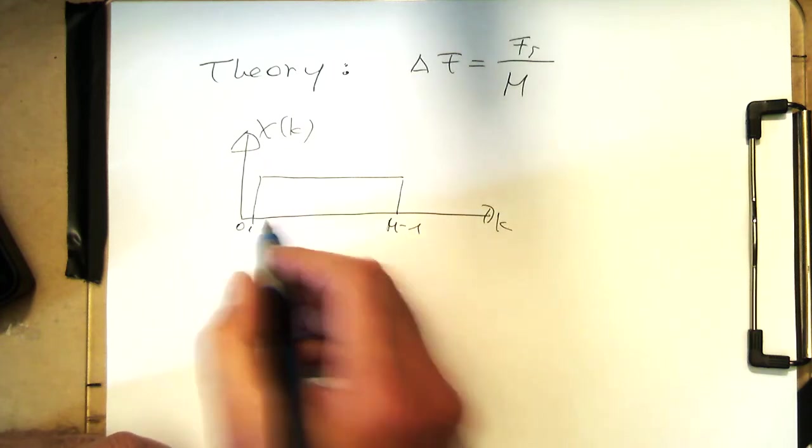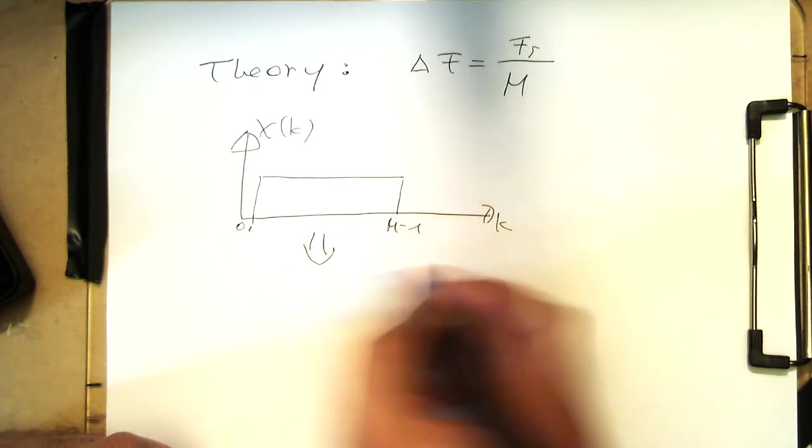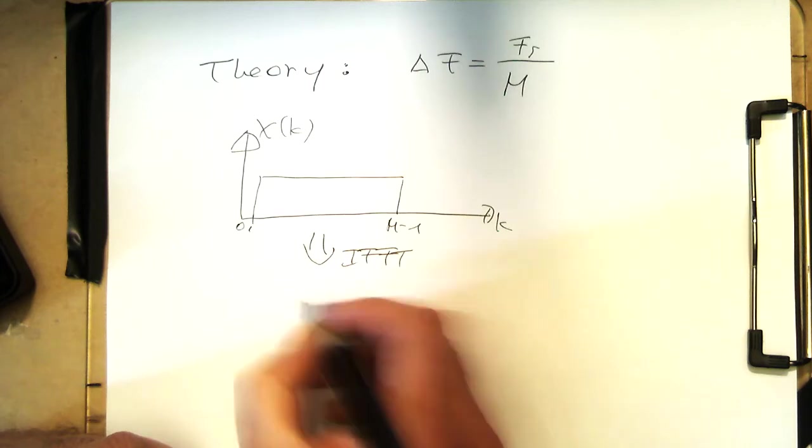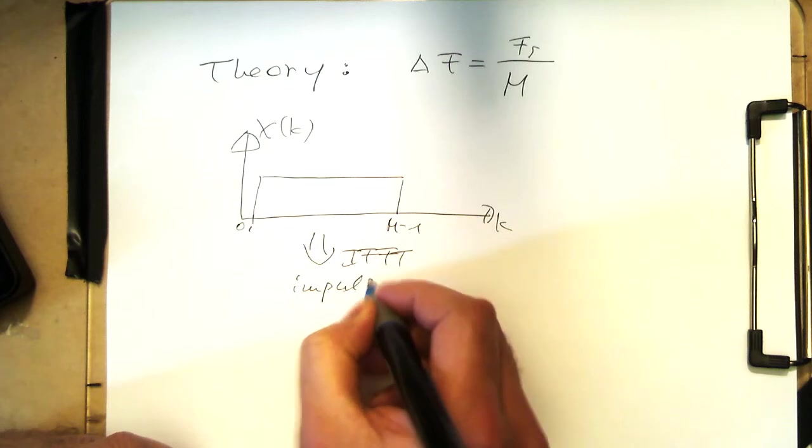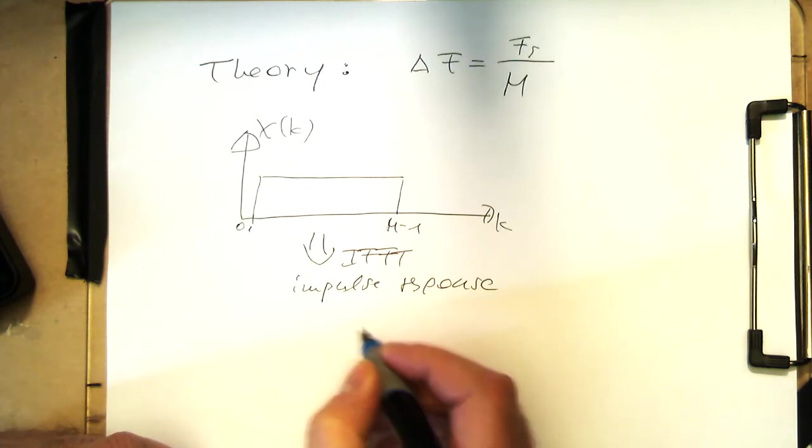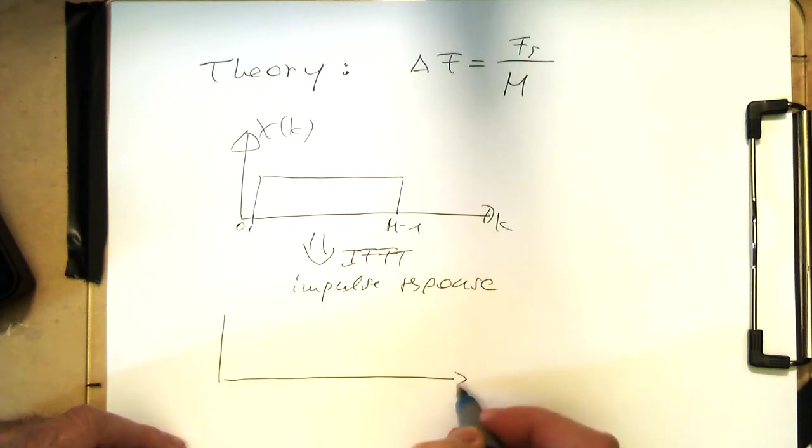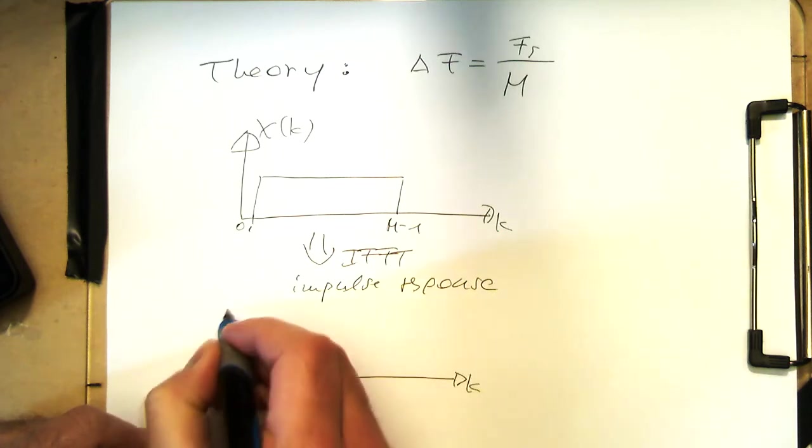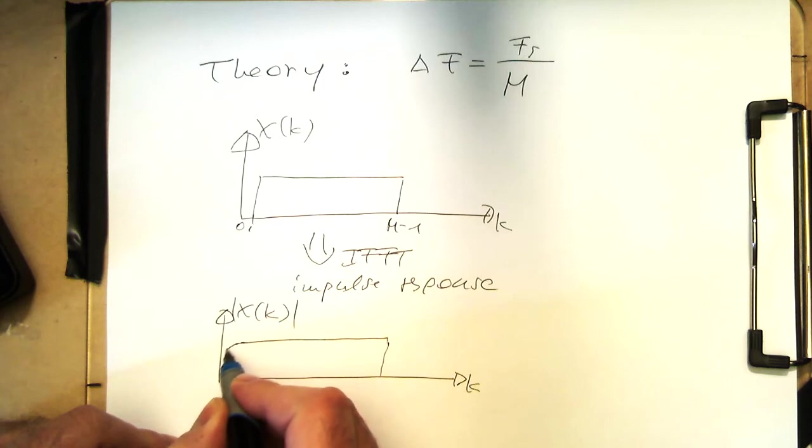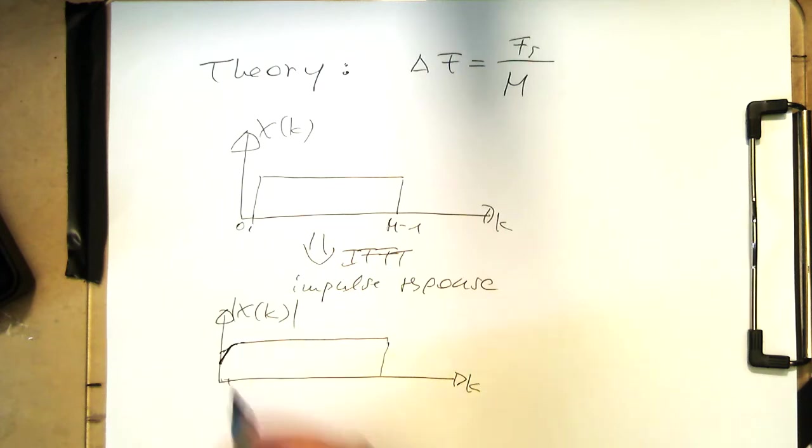So we know that if we are doing now the IFFT of that and getting our impulse response, the actual filter has no longer the ideal response, but is smoothed out. So what we're probably getting out there is maybe something like that. So let's say that's our response here, m minus 1.